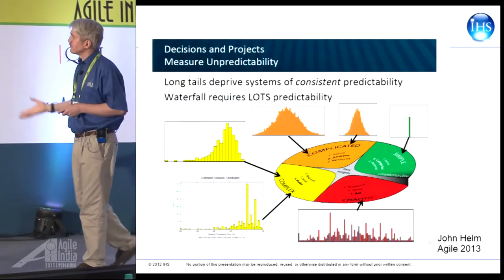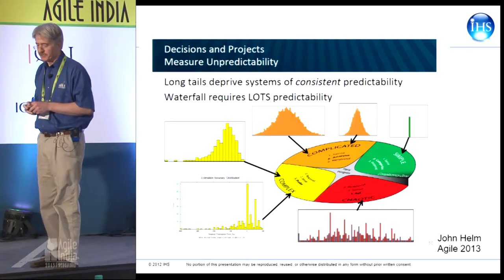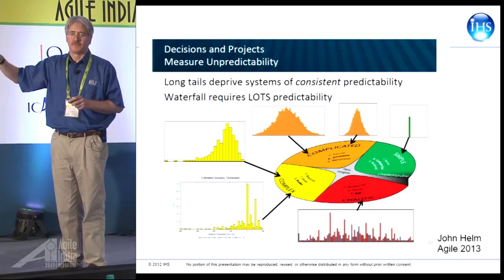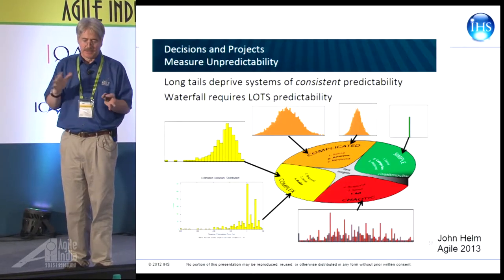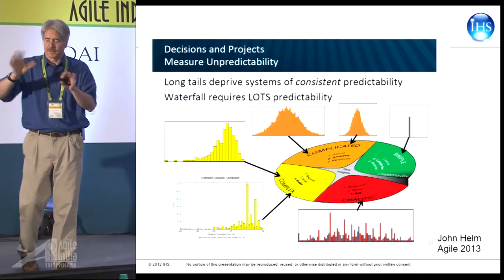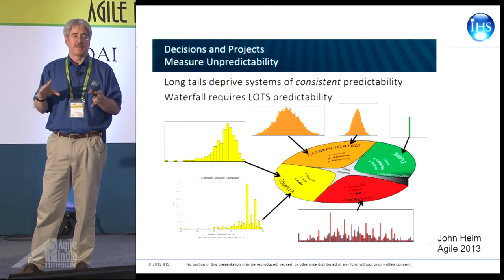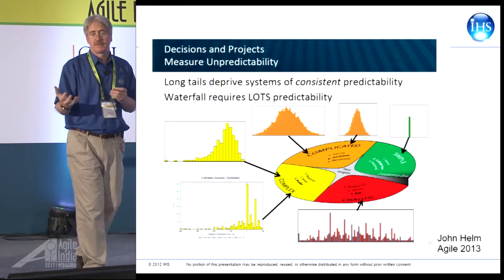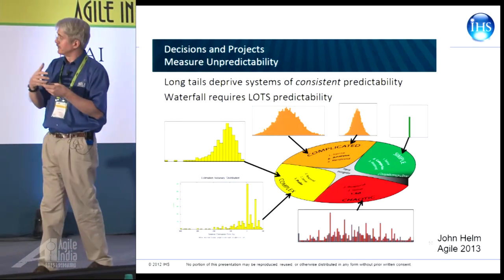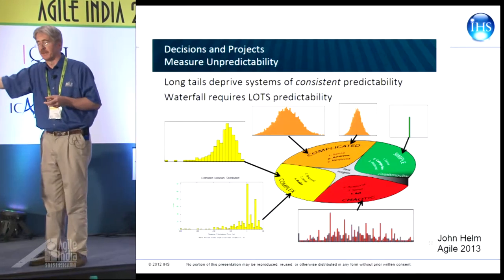We heard Dave talk today about the Cynefin framework. This explains a little bit of what's going on — we have these long tails, these log-normal type distributions that we're facing. The challenge is that estimation itself is one of those things we don't tend to be very good at. Software development activities might be more in the complicated domain, but if we haven't got the experts who really know how to do the estimation, we may actually be behaving more like the complex domain where we have very long tails — and very long tails are the things that push us out into that 4x category.